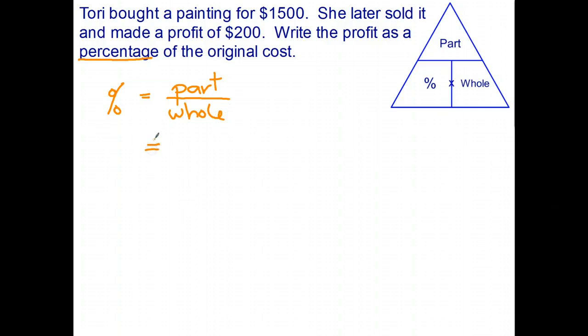The part is the profit in this case, which is $200. The whole is the original amount, which is $1,500. I'll use my calculator to turn that into a decimal. And once again, I get lots of decimal places. So I'm going to copy down the first four places.